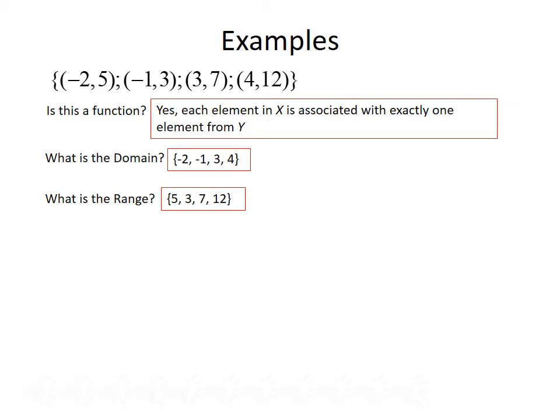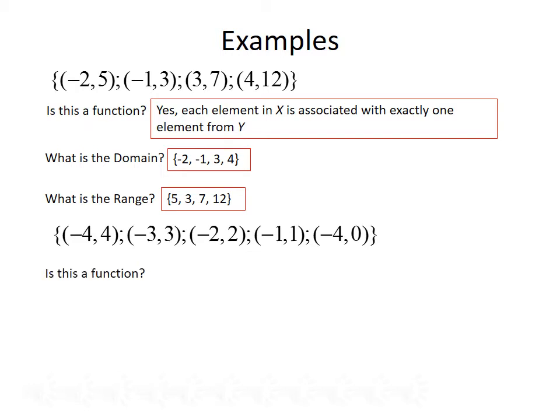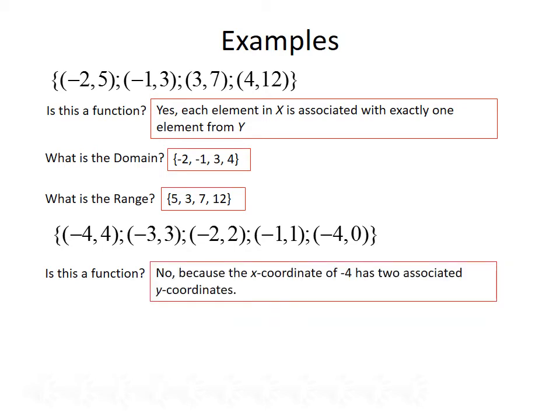Here's another example. This time, our points are (-4, 4), (-3, 3), (-2, 2), (-1, 1), and (-4, 0). Do these points represent a function? And the answer is no, because the x coordinate of -4 has two associated y coordinates.